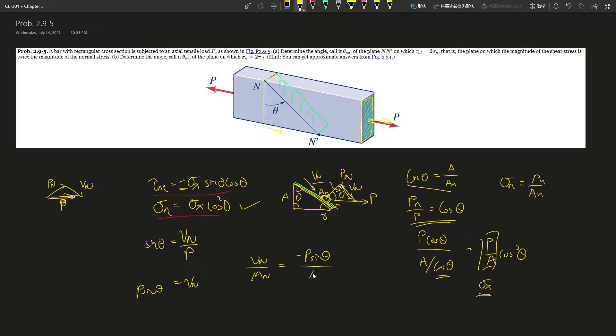So V_n over A_n, which is P sine theta, remember it's negative, over A_n. A_n is A over cosine of theta. Dividing by a fraction is just times the reciprocal, which is negative P over A sine theta times cosine theta. And this is the axial normal stress, and this is how this equation comes from.